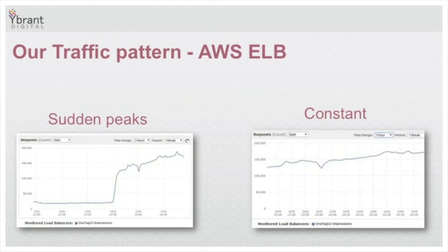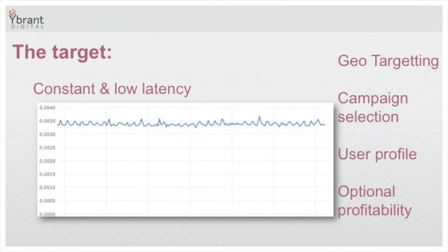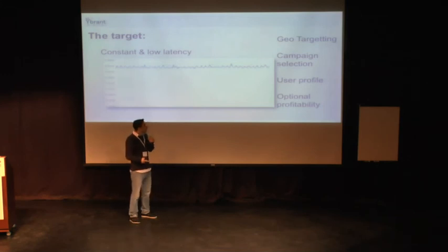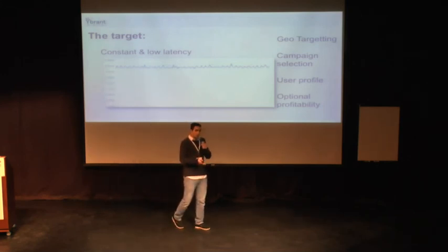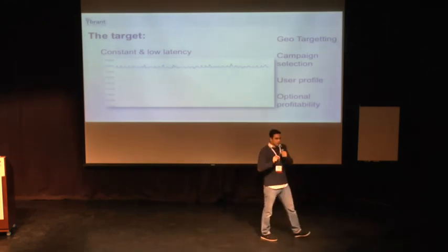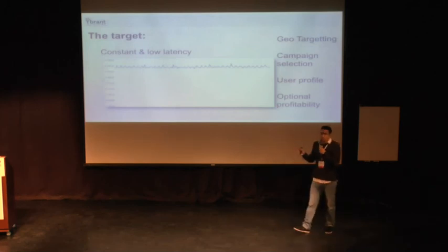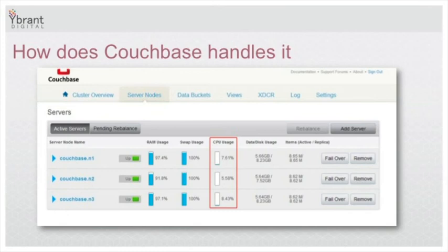The Couchbase should react when traffic spikes hit. Our design target was to keep latency as low as possible. Our latency is constant at 0.0035 seconds — that's the time from the moment a user requests an ad, flowing through the load balancer, into the impression server, through geotargeting, campaign selection from Couchbase, getting the user profile, calculating the optional profitability of the user, and serving the ad — all in less than 0.0035 seconds per impression. Couchbase uses all available RAM, and our cache miss ratio is 0 because all data is loaded into memory. It is also not a significant CPU consumer.